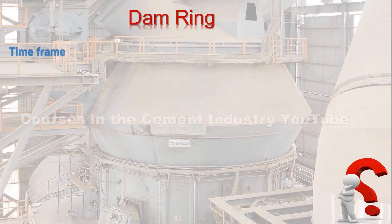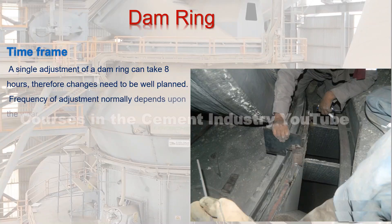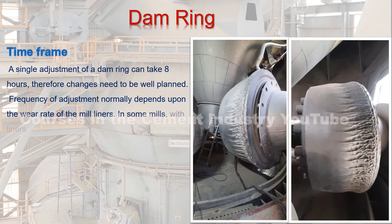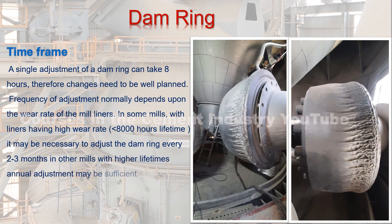Time frame: a single adjustment of a dam ring can take eight hours, therefore changes need to be well planned. Frequency of adjustment normally depends upon the wear rate of the mill liners. In some mills with liners having a high wear rate of more than 8,000 hours lifetime, it may be necessary to adjust the dam ring every two or three months. In other mills with higher lifetimes, annual adjustment may be sufficient.